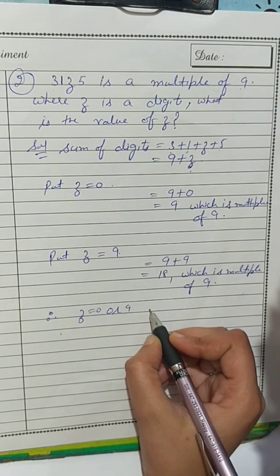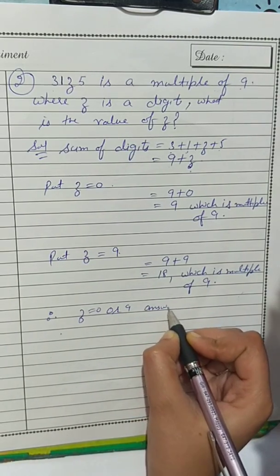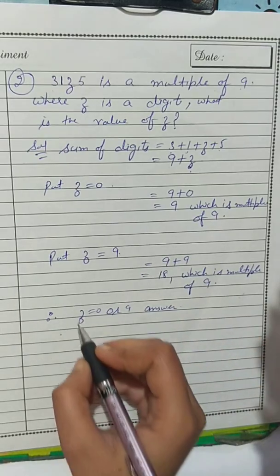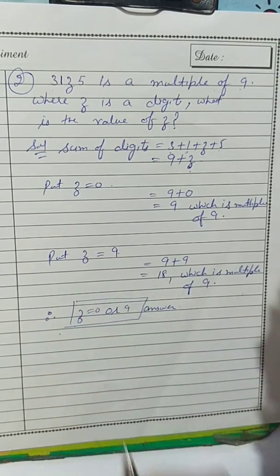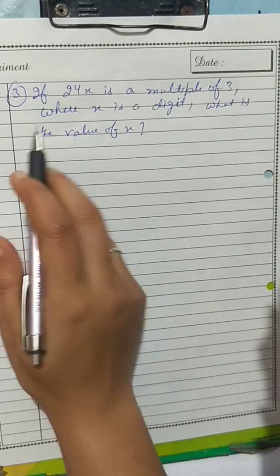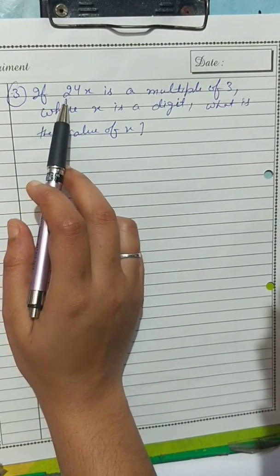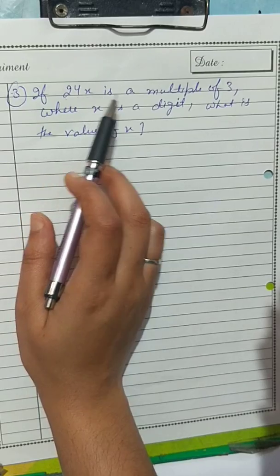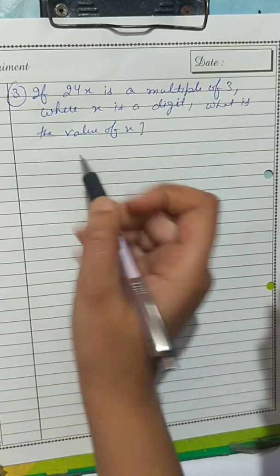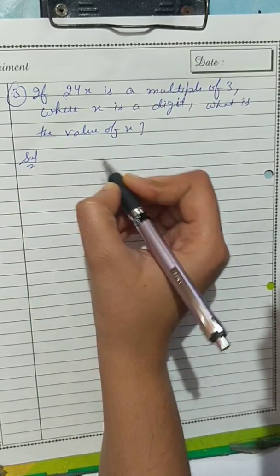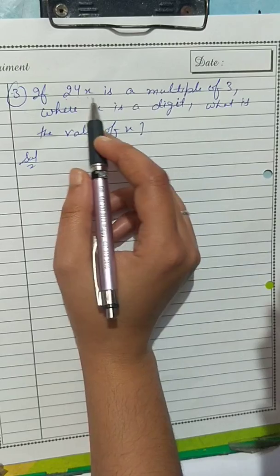Therefore, z = 0 and 9 is our answer. That completes question number 2. Next, question number 3: if 24x is a multiple of 3, where x is a digit — again same approach with sum of digits.